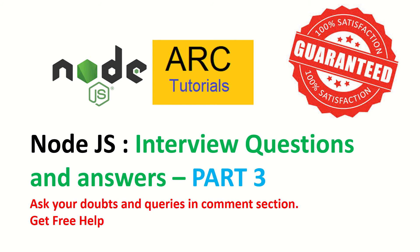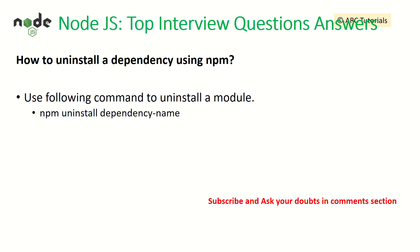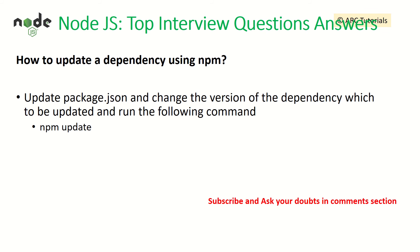How to uninstall a dependency using npm? We can uninstall any module using the following command: npm uninstall followed by the dependency name. So we just provide the command npm uninstall and followed by the name of the module that we want to remove.